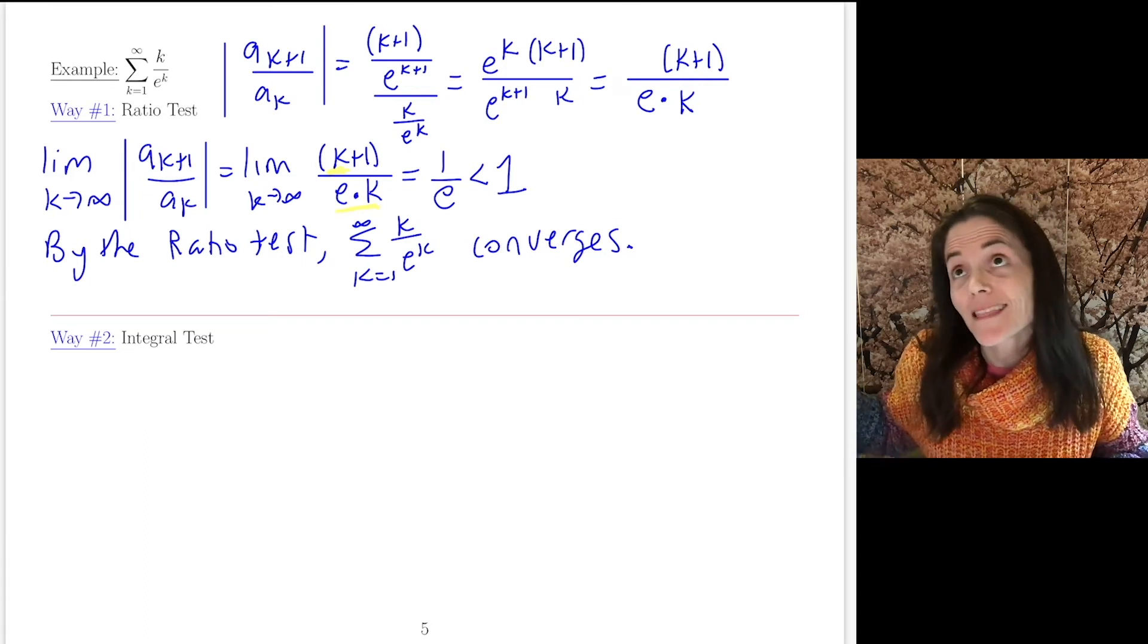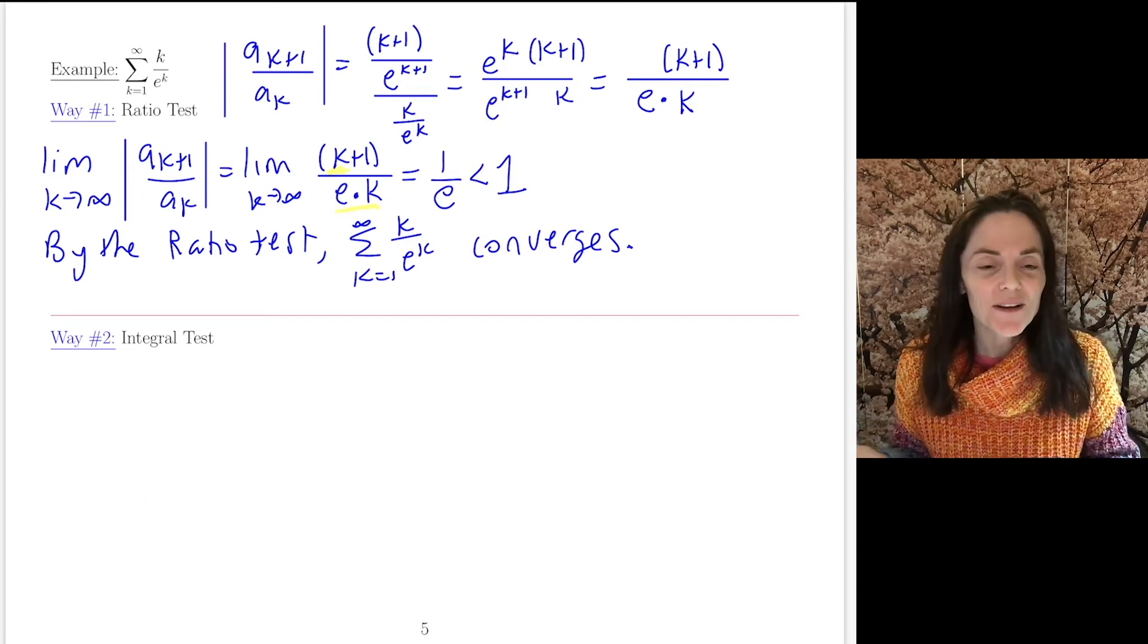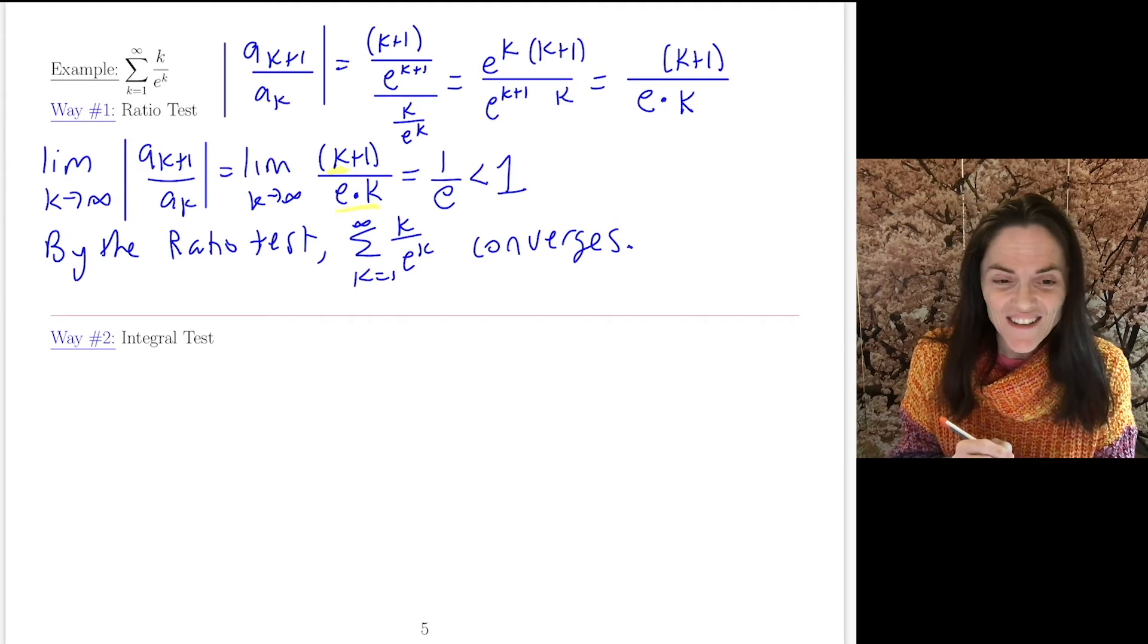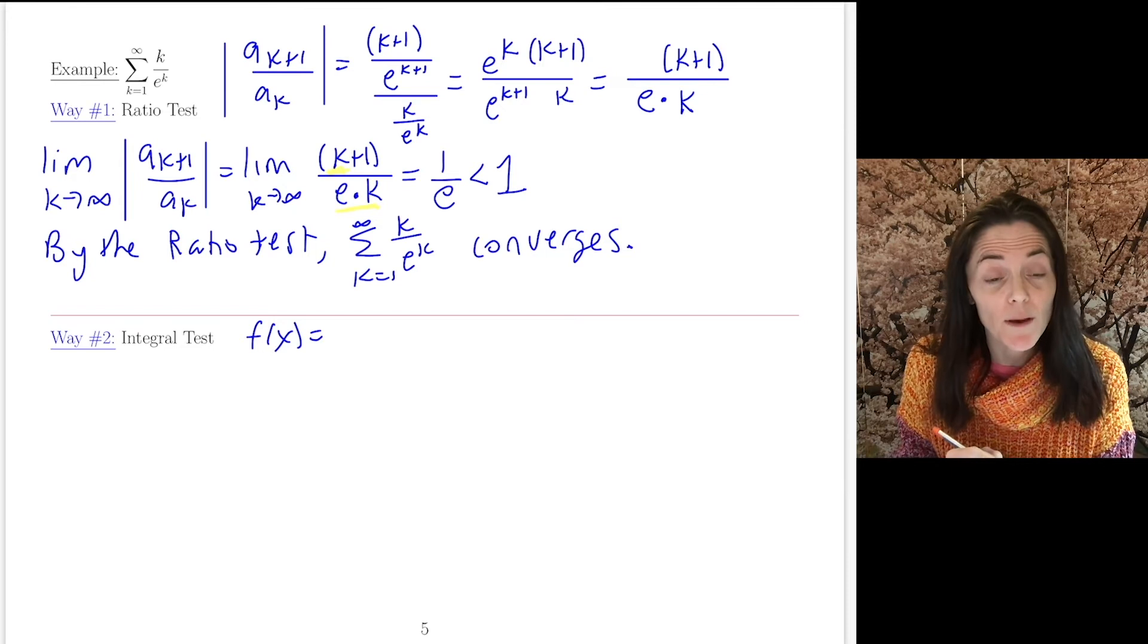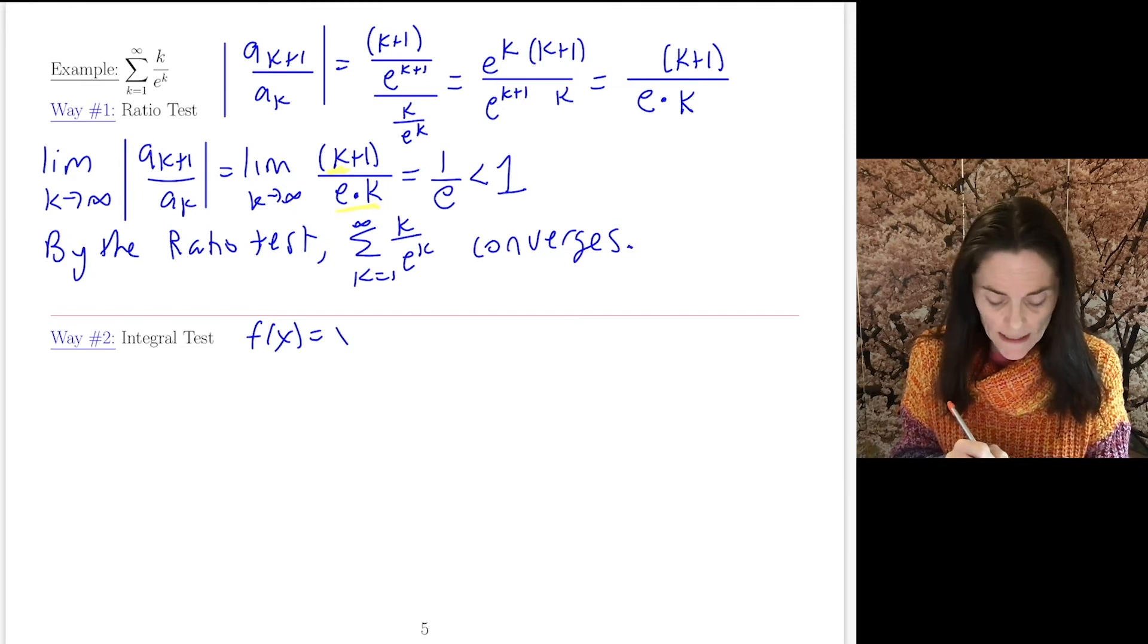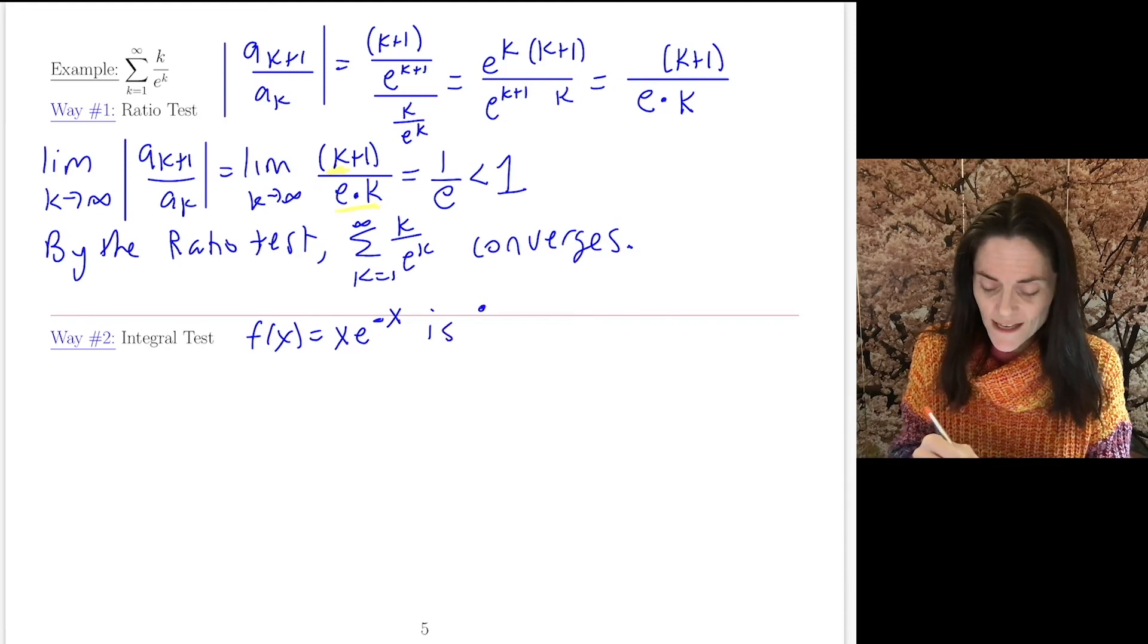Because, as I said, maybe you wouldn't think ratio test because we don't see factorials. That's not the only test you can use. So let's talk about the integral test. The function here, maybe I will use some properties of exponents. So I can write it as x·e^(-x). This is, well, for integral test, we need continuous, certainly.